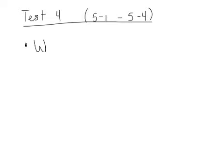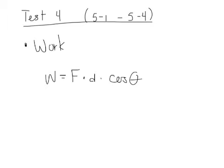Work equals force times distance times the cosine of theta. 5.1 was that work is performed on an object when there's a force applied over a distance. So whenever you see a problem where there's a force involved and you're given a distance to which that force is applied, think about work. We also use this in other sections later in the test.